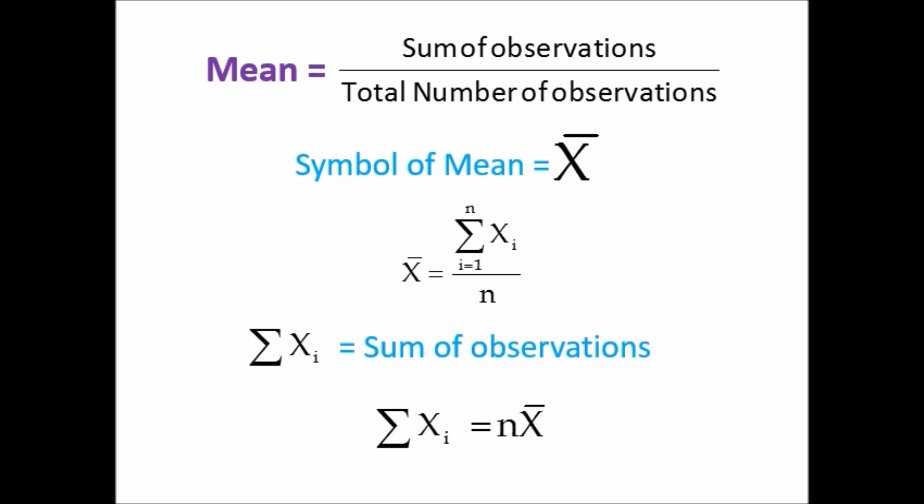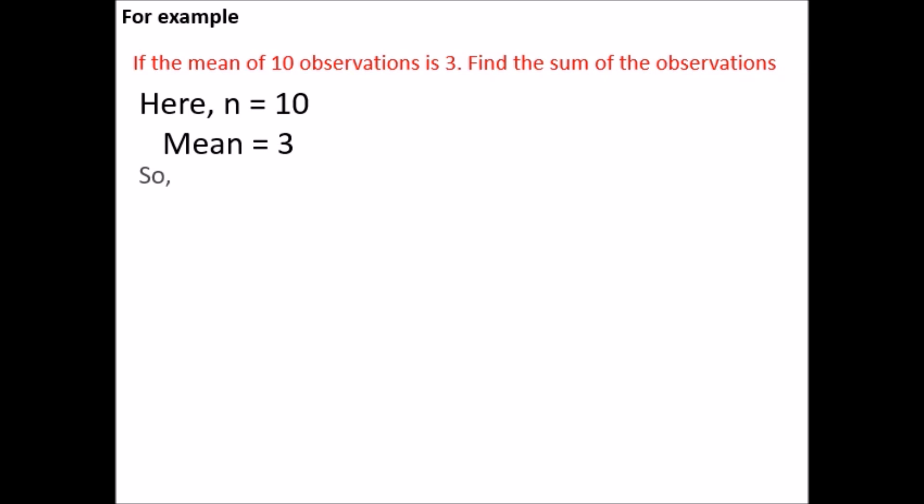Ek example dekhte hain. If the mean of 10 observations is 3, find the sum of observations. Here, n = 10, mean = 3, so Σ Xi = n × X̄ = 10 × 3 = 30.